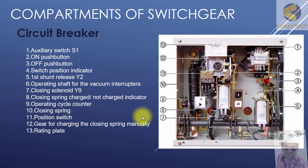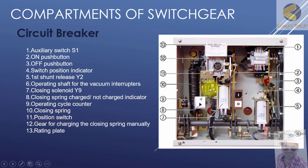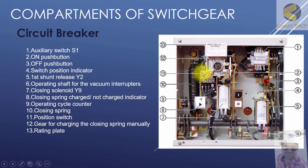Number ten is the closing spring — this is an example of a closing spring of the circuit breaker. Number eleven is the position switch. Number twelve is a gear for charging the closing spring manually. For example, if the motor has failed or there is no supply and you want to close the breaker, you can charge the spring through this gear by putting a lever here and then operating the breaker.